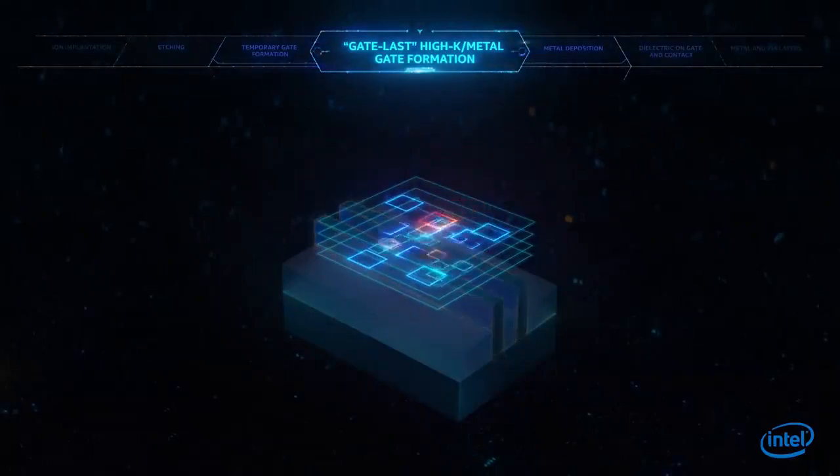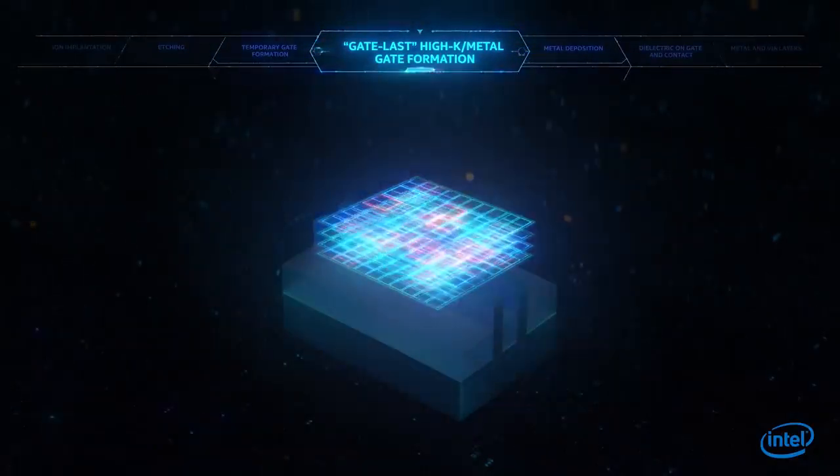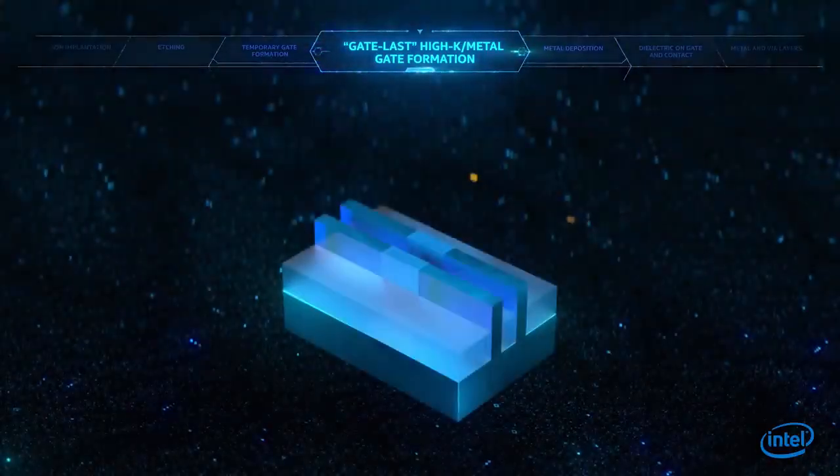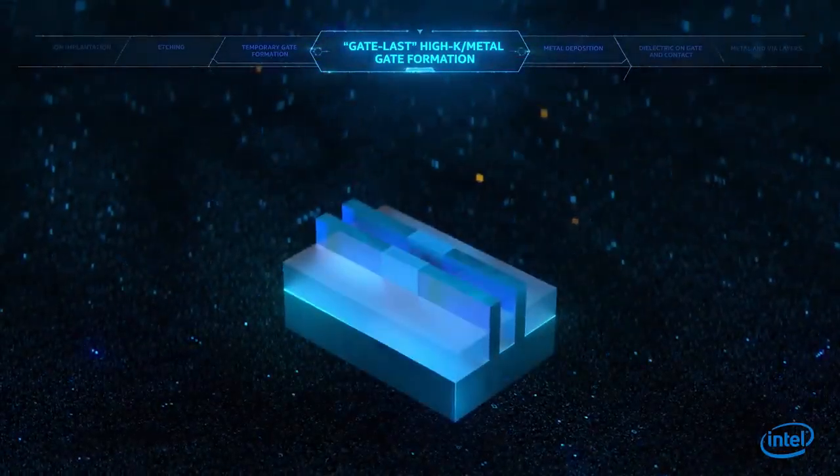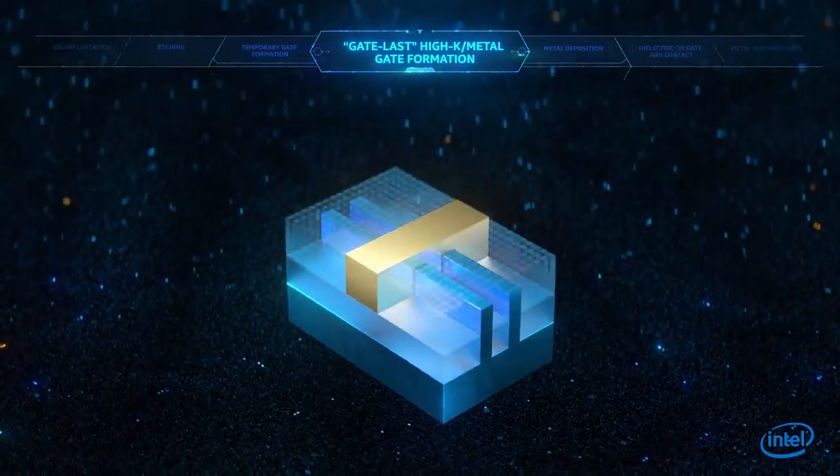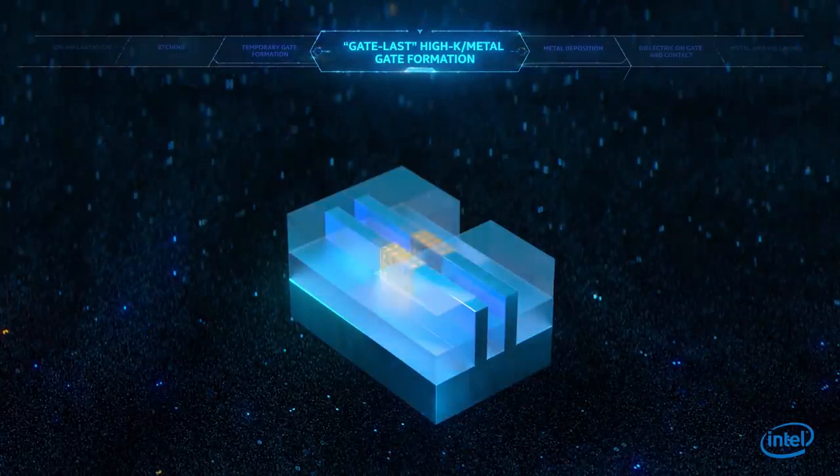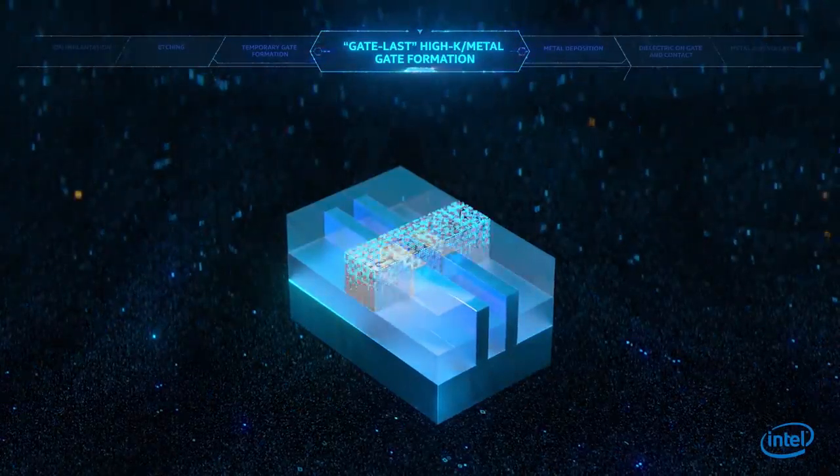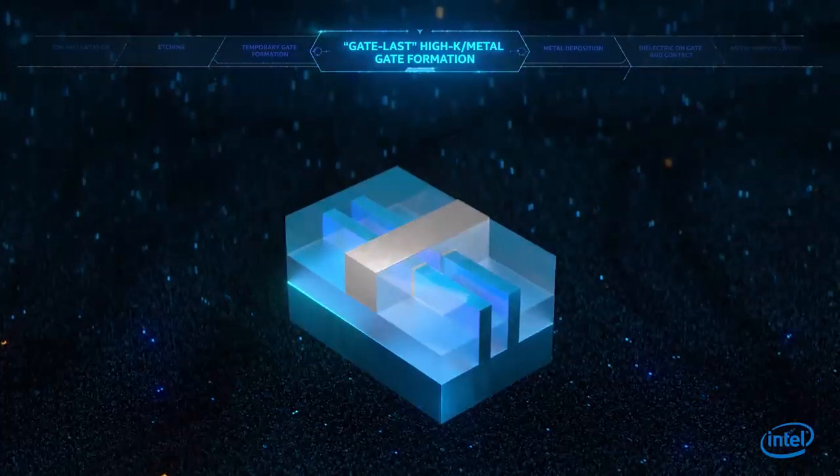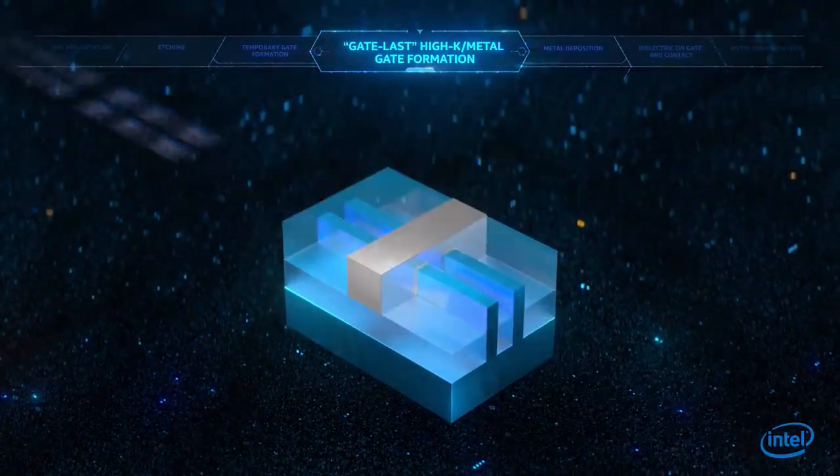Intel has devised several innovations to overcome fundamental barriers to continue transistor scaling. One such innovation is a breakthrough fabrication method called gate-last. It involves building, then removing, a temporary gate in order to precisely place the dielectric material and metal gate. This allows for the gate to wrap around the fin and control the flow of electrons through the channel.